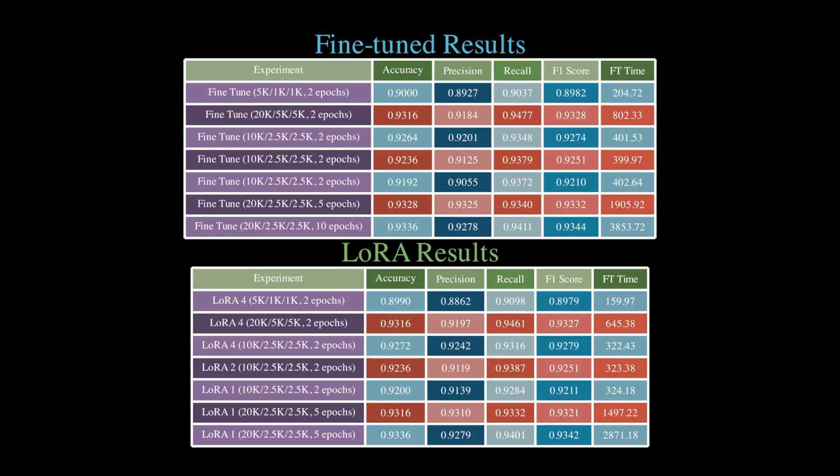Now let's shift our focus to the table below, which presents the results for the LoRa fine-tuned model. The number after LoRa indicates the number of LoRa layers used in the fine-tuning process. For instance, LoRa 4 means 4 LoRa layers were utilized.